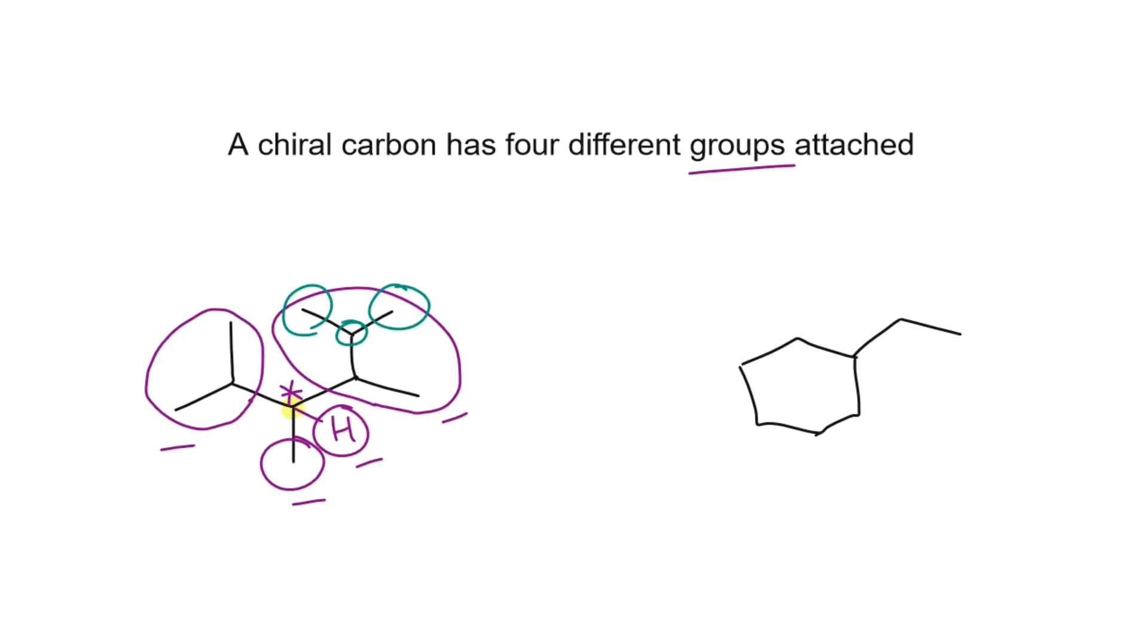Now let's look at how to identify the four groups for a carbon that is part of a ring such as this one here. We've got one group here, we've got another one here. For the ring itself, we're going to divide it in half starting from the carbon of interest and we can circle each half of the ring.